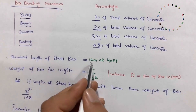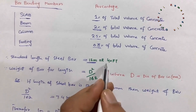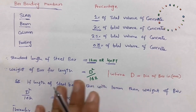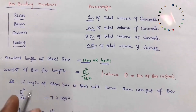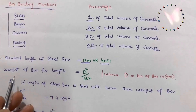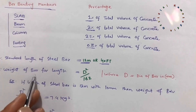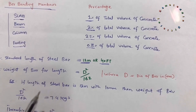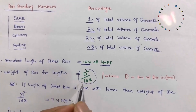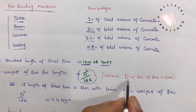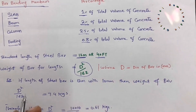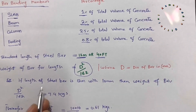The standard length of a steel bar is 12 meters, which equals 40 feet. To find the weight of a steel bar for a given length, you can use the formula: d squared divided by 162, where d is the diameter of steel in millimeters.